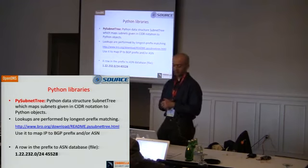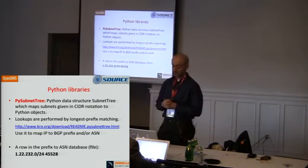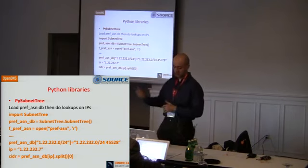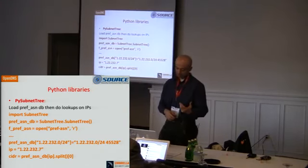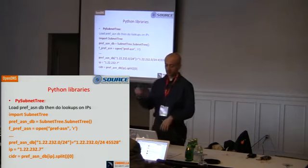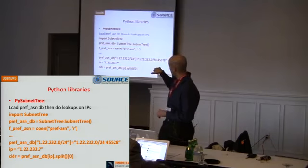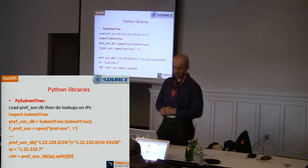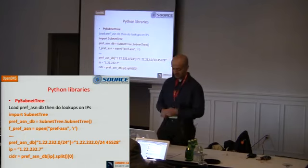Another interesting library is PySubnet3, which helps you get a mapping between IP and CIDR. You instantiate the subnet tree data structure, load a file with prefix-to-ASN mappings, and then do a lookup on an IP to get back the prefix it belongs to. I made the key the prefix and the value both the prefix and the ASN, so the data structure accepts an IP and returns the prefix.